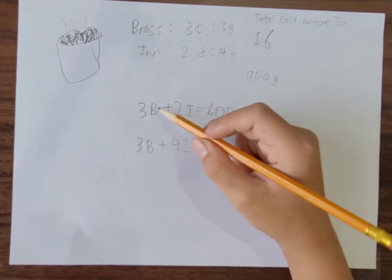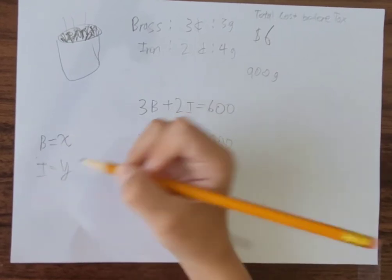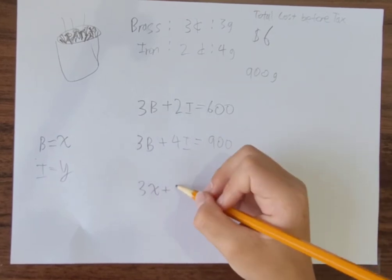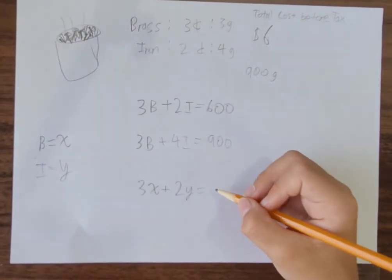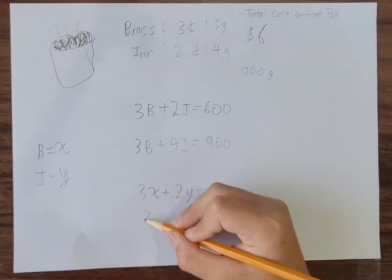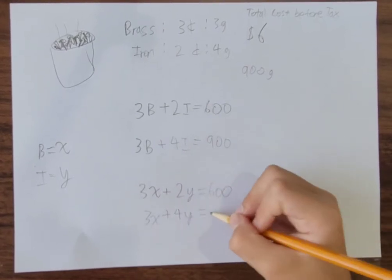Now let's replace B with X and I with Y. Then 3X plus 2Y is equal to 600, and 3X plus 4Y is equal to 900.